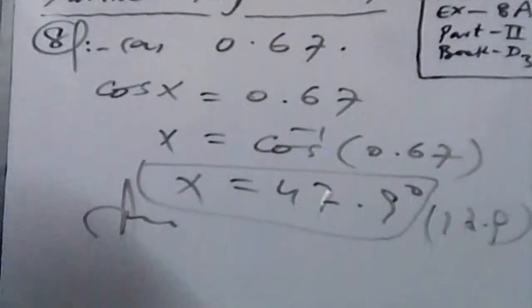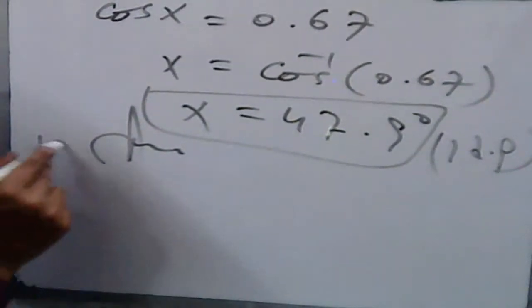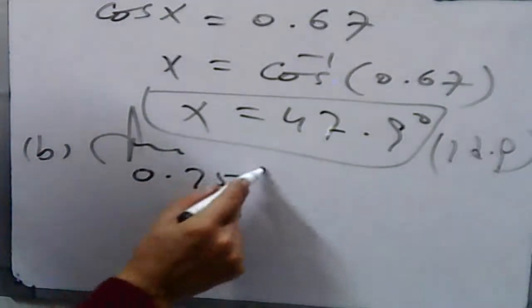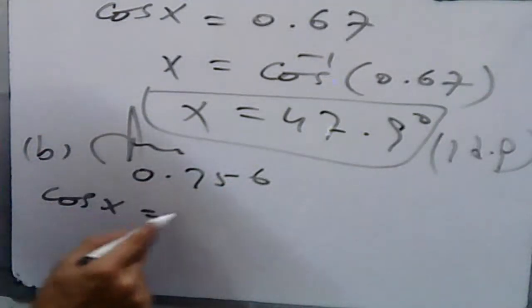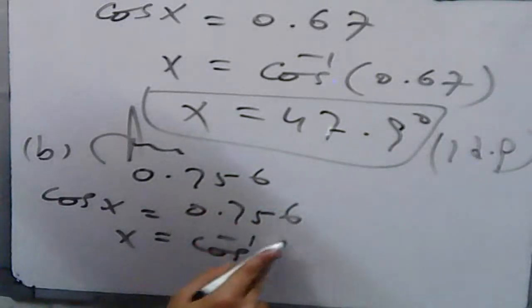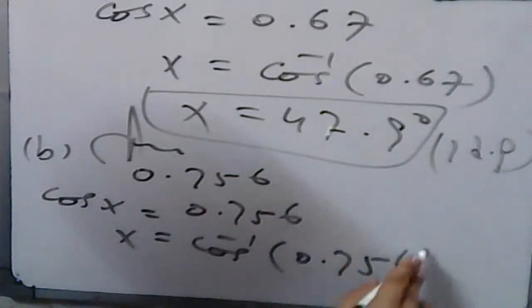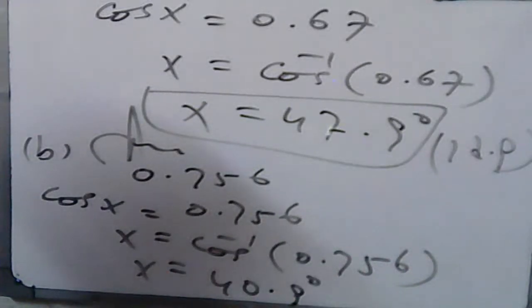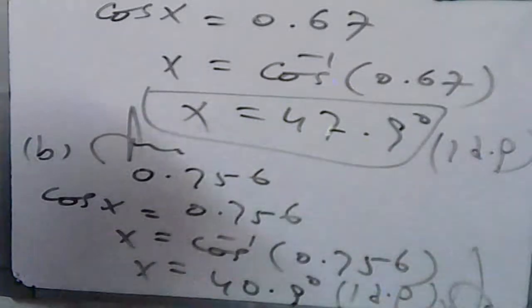In part b, we have to find 0.756. Cos x is equal to 0.756. With the help of a calculator you can get 40.9 degrees, up to 1 decimal place. That is your required result. Since 40.9 is less than 90, it is an acute angle. No need to convert to obtuse.